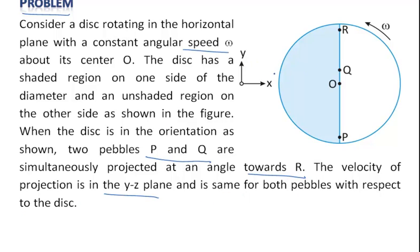Now this is Y. This direction is Y and Z is out of the plane of the screen that you see. So they were projected from point Q and point P. Now the velocity projection is same.